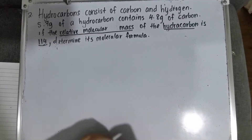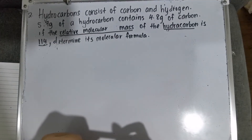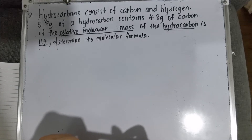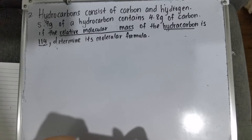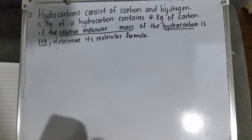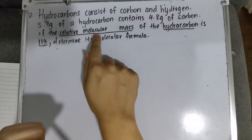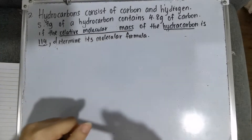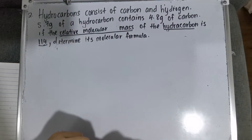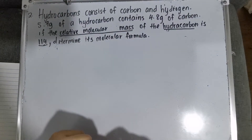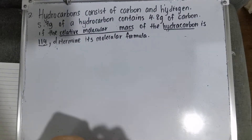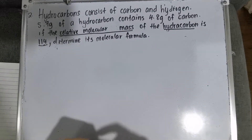So question number 2: hydrocarbons consist of carbons and hydrogens. 5.7 grams of hydrocarbon contains 4.8 grams of carbon. If the relative molecular mass of the hydrocarbon is 114, what is the molecular formula?